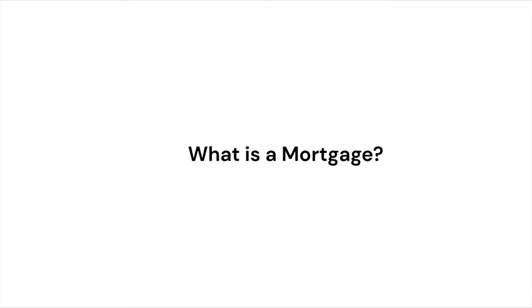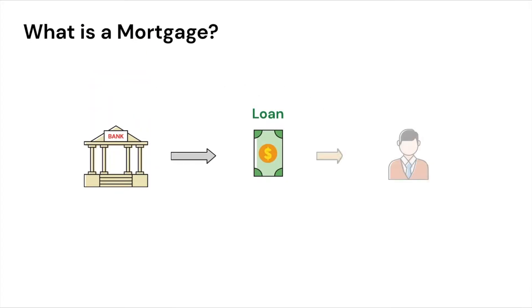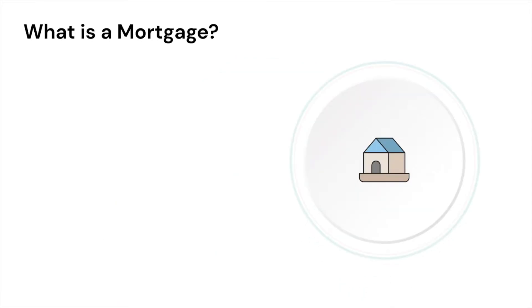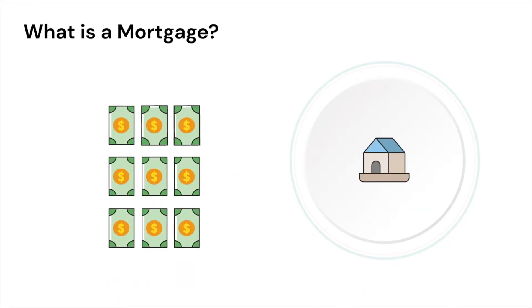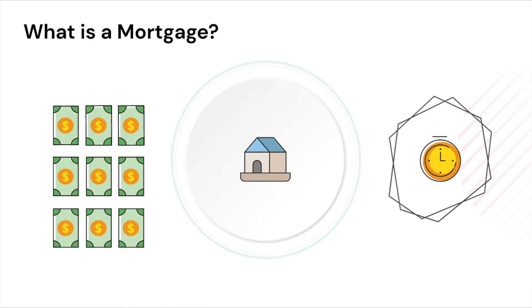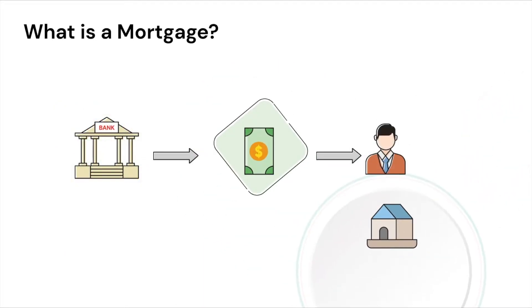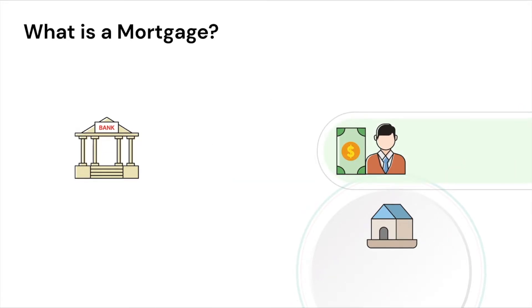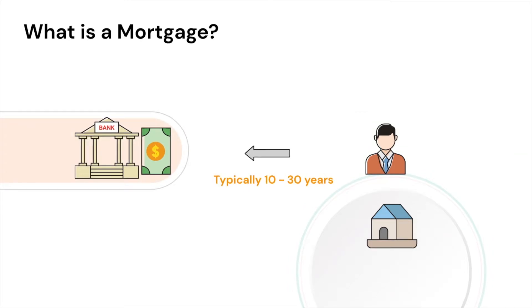What is a mortgage? A mortgage is simply a loan backed by real estate, for example a house. Individuals usually take mortgage loans to buy houses. A house can usually cost a lot, and it would take a person a long time to build up enough savings to fully pay for the house, so homebuyers take mortgage loans and repay them from their salary, earnings, savings, etc.